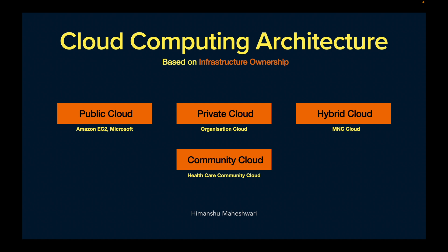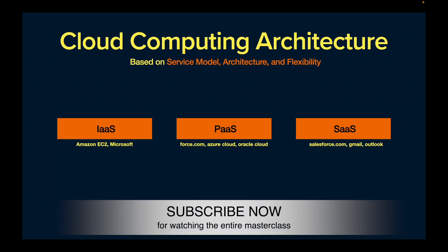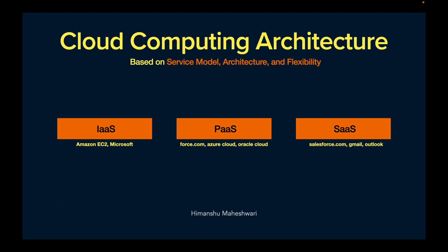So the cloud computing architecture based on infrastructure ownership has four types: public, private, hybrid, and community. Now, based on the service model and flexibility — how the architecture is set up — there are three different categorizations within the same cloud computing framework.